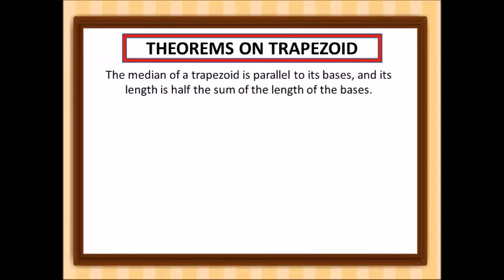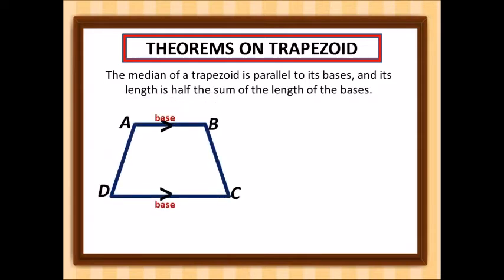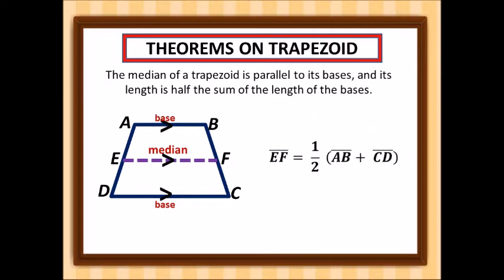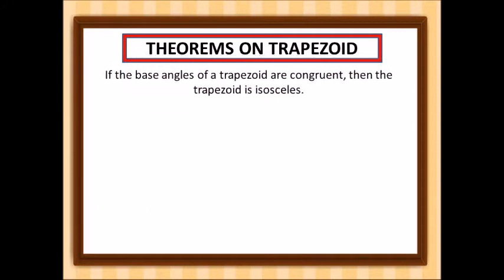Now let's look at the different theorems on trapezoids. The median of a trapezoid is parallel to its bases, and its length is half the sum of the lengths of the bases. So if EF is our median, the equation from the theorem is: EF = (1/2)(AB + CD).